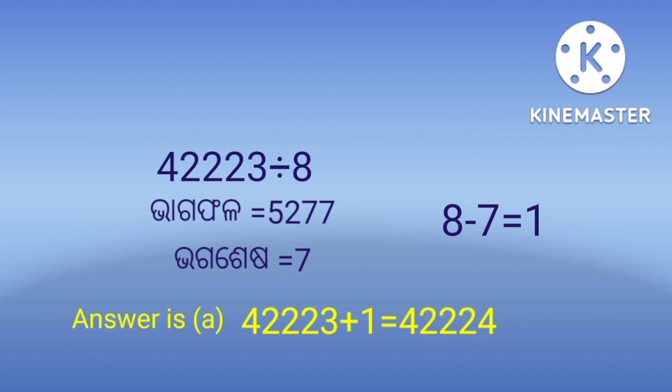So adding 1 to 42223 gives us 42224, and this number is divisible by 8.